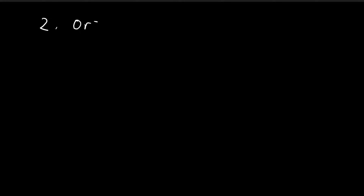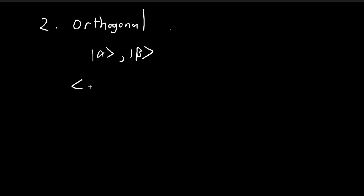The second keyword you need to know is orthogonal. If I have a vector alpha and a vector beta, and the inner product between these two vectors is equal to zero, then I would say that these two vectors are orthogonal.